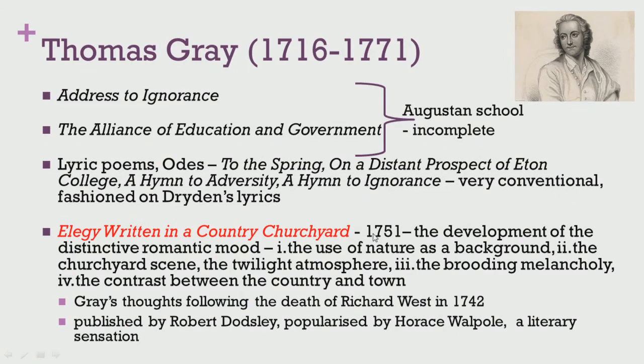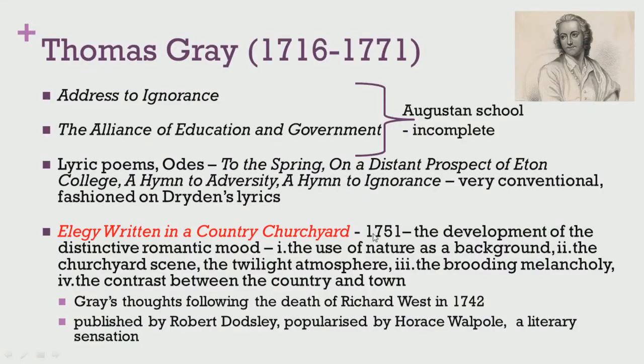What made him depart from existing traditional forms of writing was the composition of Elegy Written in a Country Churchyard in 1751. This work completely altered not just the career graph of Thomas Gray but also the way in which English literature was beginning to be fashioned — the Augustan tenets which had dominated 18th century poetry almost completely disappeared. The elegy set new trends and a new kind of standard in English literary writing, signalling the development of a distinctive romantic mood by the end of the 18th century.